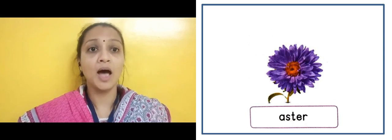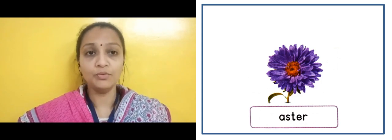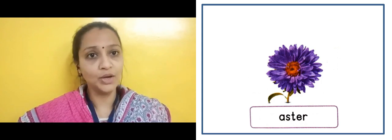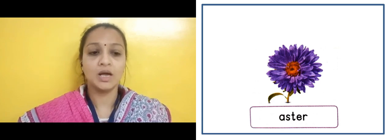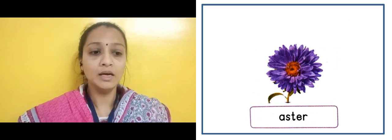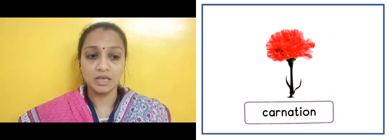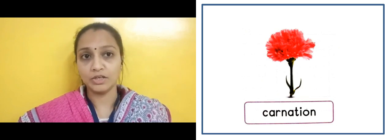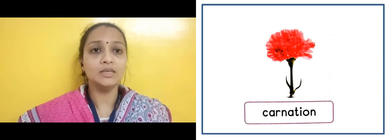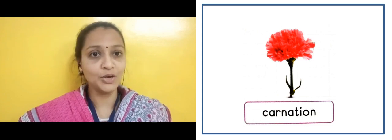Here there is an image of an Aster — A-S-T-E-R. It is a beautiful flower that comes in different colors, and it does not have a fragrance. Now in next slide, here there is a flower known as Carnation — C-A-R-N-A-T-I-O-N. It is also available in different colors.